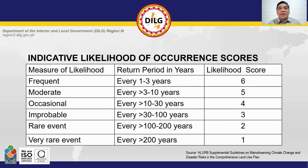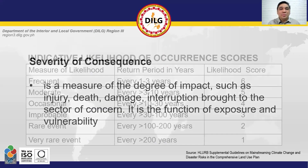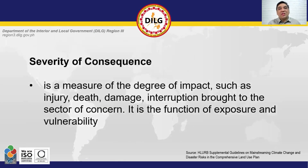These are the recommended parameters for the likelihood of occurrence scores. We already accomplished this in Step 1 during the Hazard Characterization, so you may use the result of that process for this activity. Meanwhile, severity of consequence is a measure of the degree of impact — such as injury, death, damage, and interruption — brought to the sector of concern.